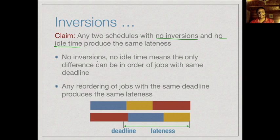If we have no inversions and no idle time, the only flexibility we have is to reorder jobs with the same deadline. We might have multiple jobs with the same deadline and could pick different orderings, but that would not create inversions since inversions only happen when something strictly smaller comes after something strictly bigger.